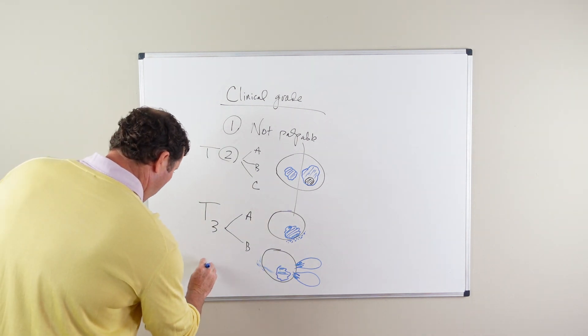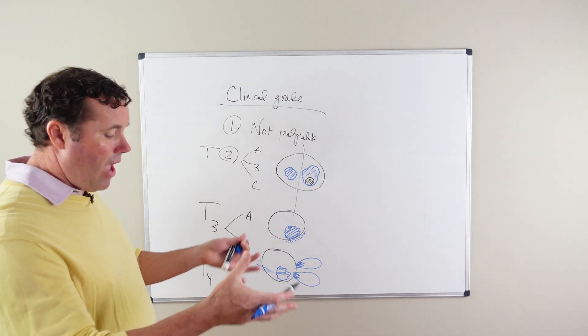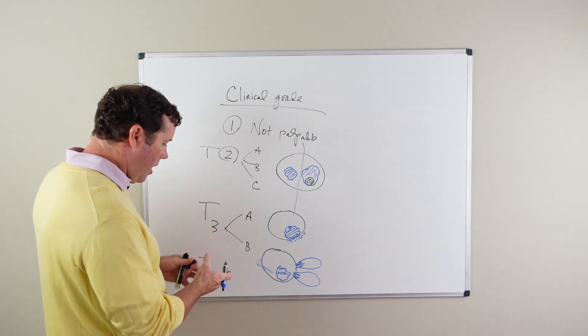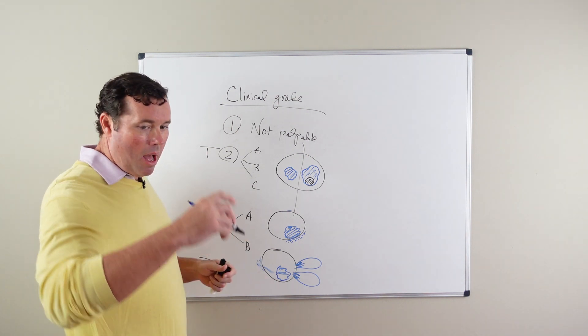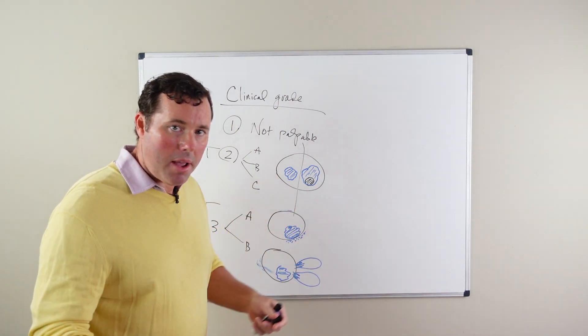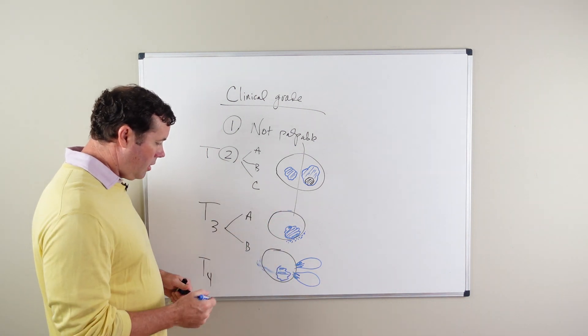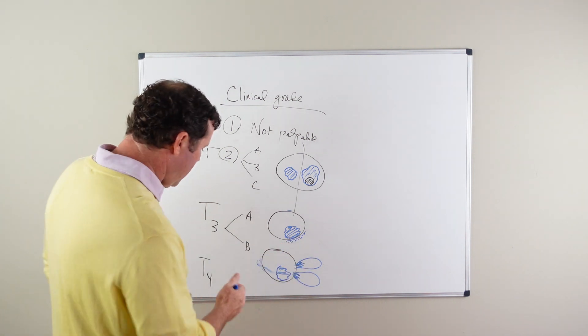And then T4 is advanced spread of disease, advanced spread of cancer. That's palpable cancer either in the rectum or in the pelvic sidewall - a fixed prostate, firm prostate, something that is consistent with metastatic disease.